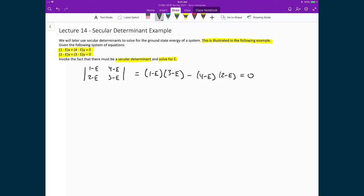The next step is to foil out these terms: 3 minus 3e minus e plus e squared, minus (8 minus 2e minus 4e plus e squared), all equal to 0. The e squared terms cancel out.